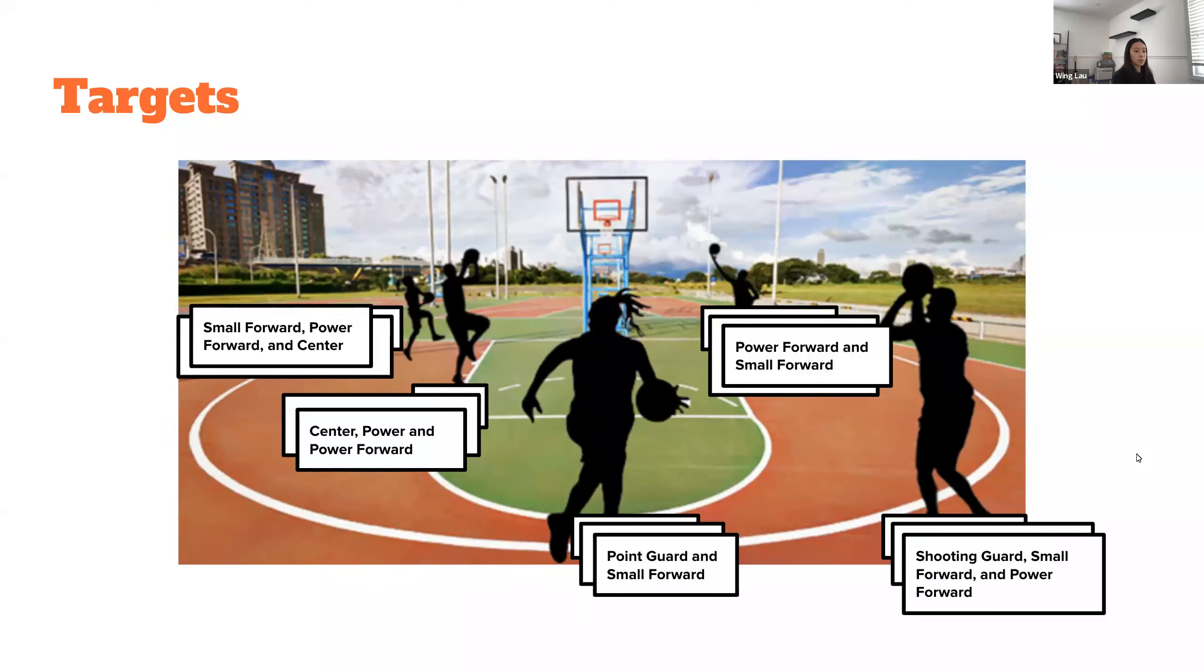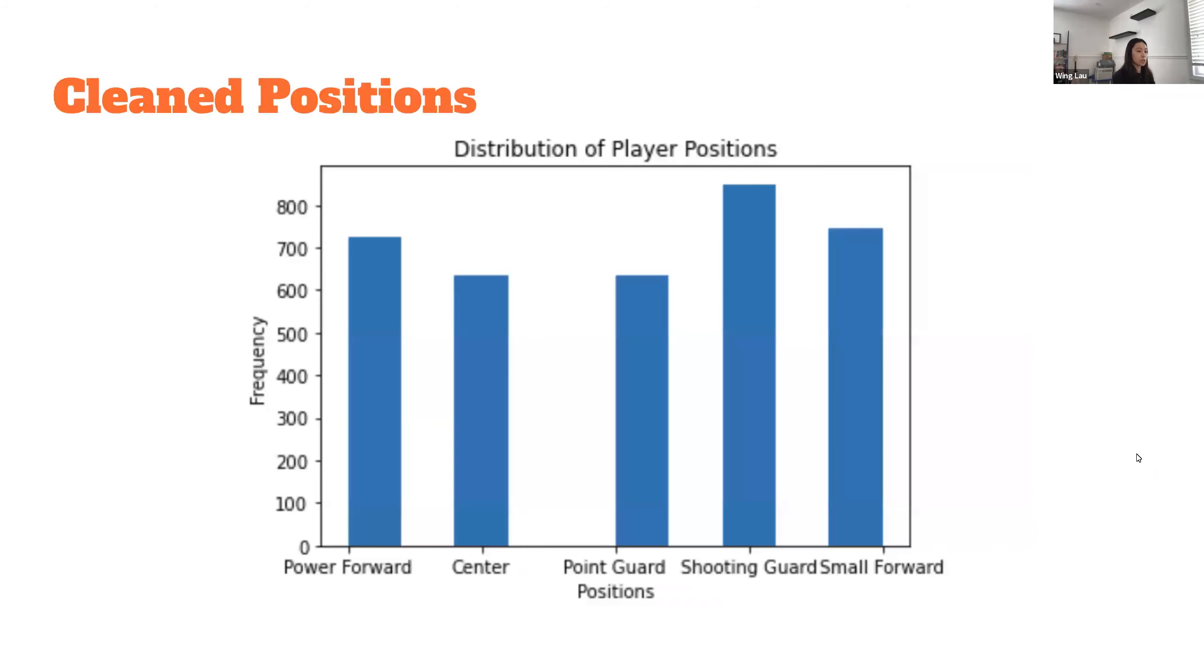Luckily, the way the positions were listed was in most played to least played. So I just took the first position for each player. This is the distribution of the different positions. For the most part, it's pretty balanced.